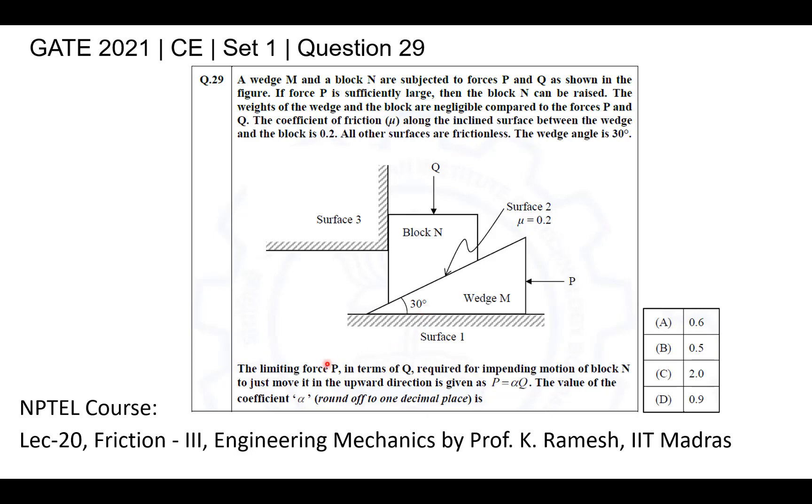The limiting force P in terms of Q required for impending motion of block N to just move it in the upward direction is given as P equals alpha Q. The value of the coefficient alpha rounded off to the first decimal place is asked, and the options are given here.